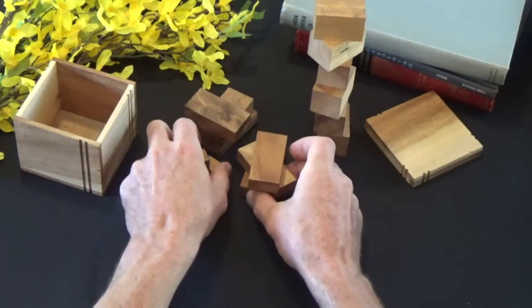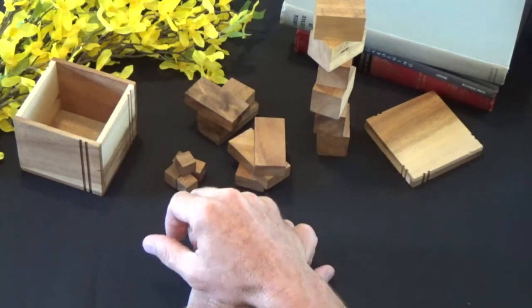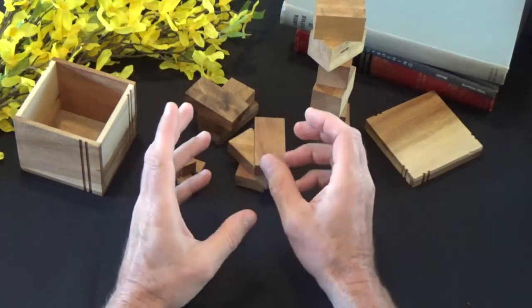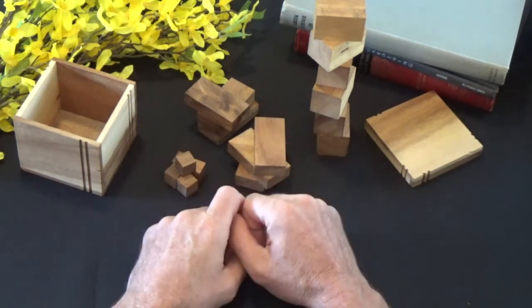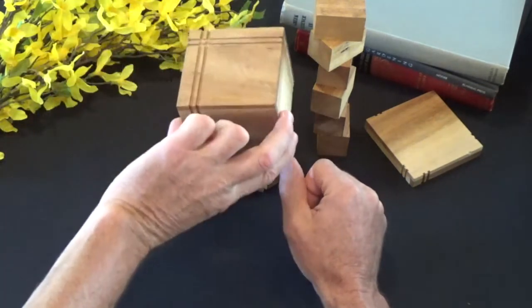So 17 pieces, how do you get them in the box so that lid will come on? So we're essentially having to build a cube from these 17 pieces that will fit in the box, or that we can put the box over.